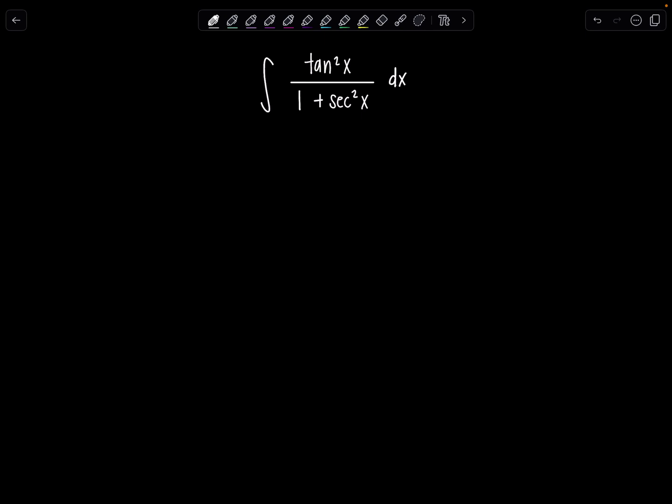Like I mentioned, I want to try to use a u sub and the thing that's screaming at me is the fact that there's tangents and secant squared, and I know the derivative of tangent is secant squared x. So I'm hoping can I somehow let u be tangent x and then du would be secant squared x dx.